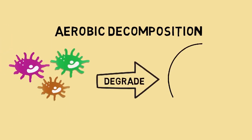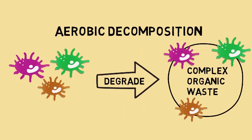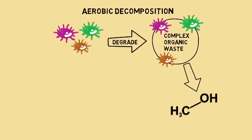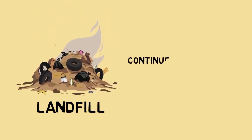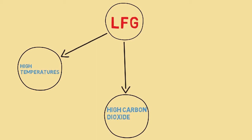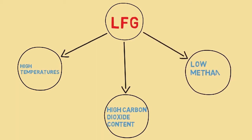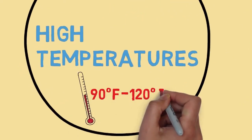During the aerobic decomposition phase, microorganisms slowly degrade the complex organic portions of the waste, using the oxygen trapped during the landfilling process to form simpler organic compounds, carbon dioxide, and water. Aerobic decomposition begins shortly after the waste is placed in the landfill and continues until all of the entrained oxygen is depleted. Aerobic bacteria produce an LFG characterized by high temperatures, high carbon dioxide content at 30%, and low methane content at 2 to 5%. Interior landfill temperatures can run between 90 and 120 degrees Fahrenheit.